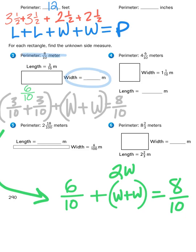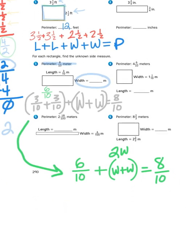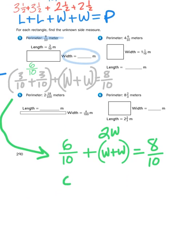Because what is multiplication? It's just repeated addition. And if I'm just adding the same thing to itself once, it's like multiplying it by two. So, now, I have another way of looking at this problem. Six tenths plus two w equals eight tenths. Now, we're diving into a little bit of algebra right here. And that's okay. You're ready for it.